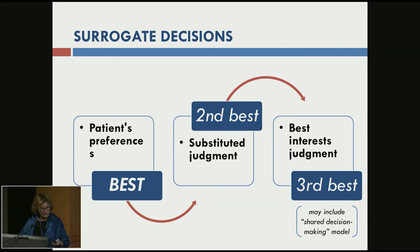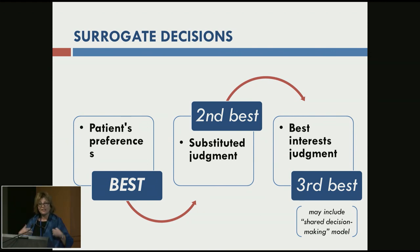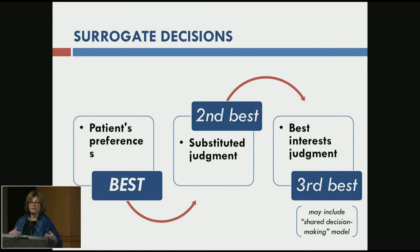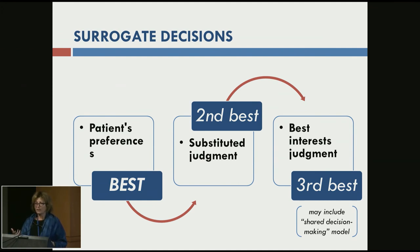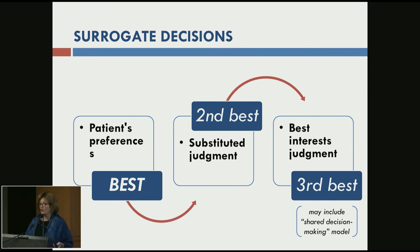For surrogate decisions, the best framework is if we know what a patient's preference is — established by an advance directive or a documented conversation with the patient. If you have a conversation with a patient and they give verbal indications of what they want, documenting that in the chart serves as valid indication of patient preference. If you don't know their preferences, we deal with substituted judgment — someone who knows the patient can tell you what their values might be. If we don't know any of that, you're left with best interest judgment, which is the third best option.